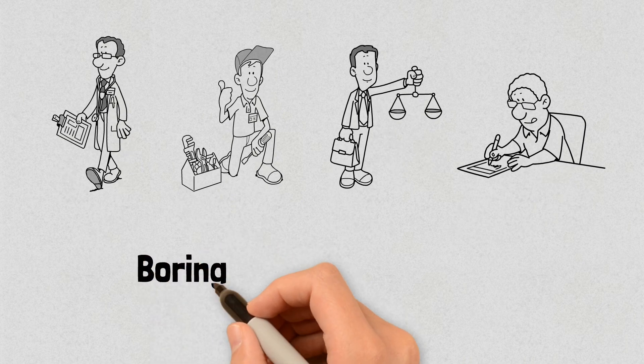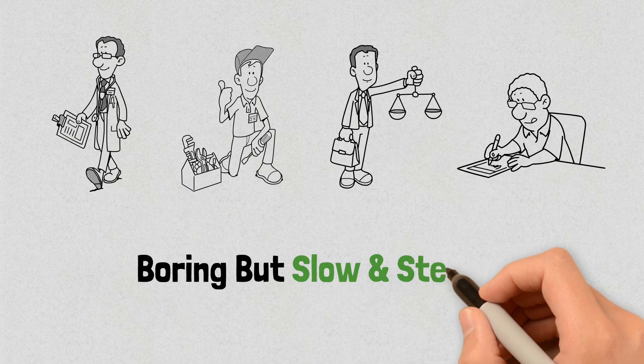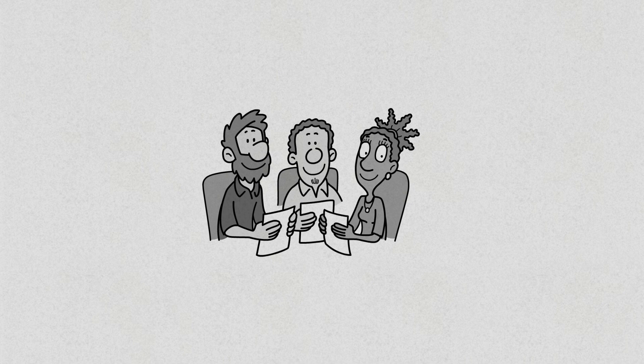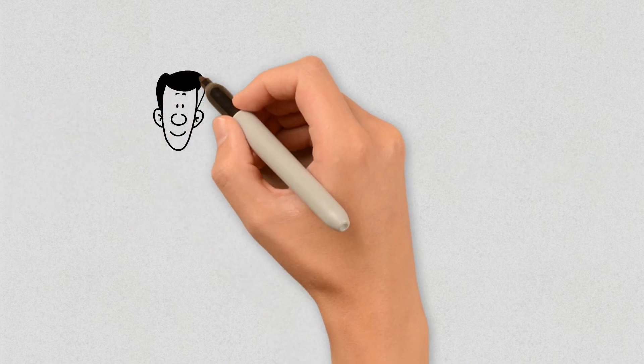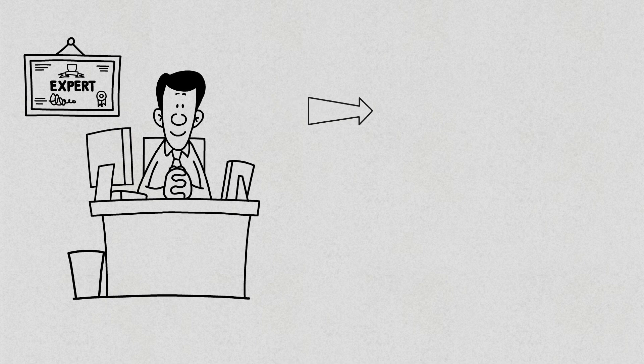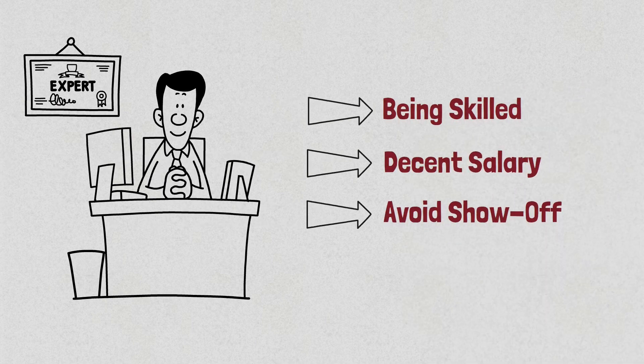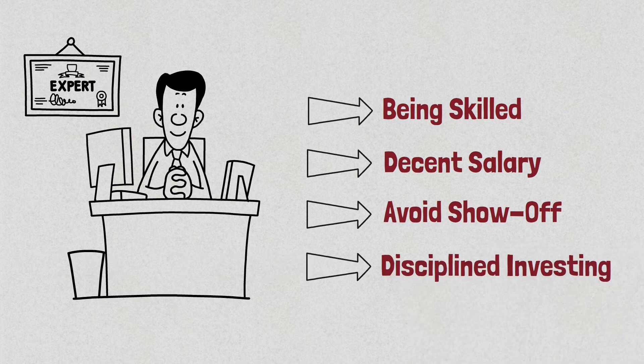This is a boring yet slow and steady approach to becoming a millionaire in a reasonable time without taking uncalculated risks. It works great for people who like the feeling of control and certainty over their lives. The only thing you need is to be reasonably good at what you do, raking in a decent salary, not living extravagantly, and investing steadily over the years.